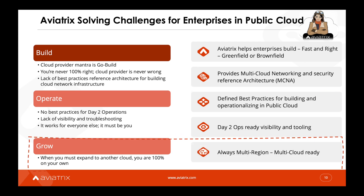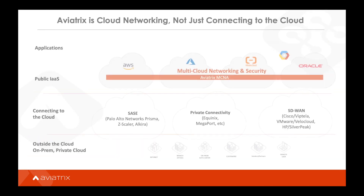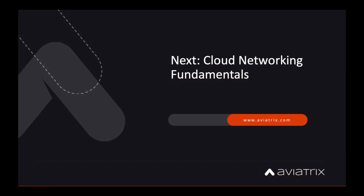We are always multi-region ready and multi-cloud ready, so when you need to grow, Aviatrix is there to help. Over the course of this training, we'll go into more details as to how we do that. Often the question comes up: where does Aviatrix fit in the ecosystem of independent software vendors, or ISVs? The answer is that Aviatrix, as a born-in-the-cloud company, is all about cloud networking. We help enterprises connect to the cloud, and through our deep partnerships with each CSP — AWS, Azure, GCP, OCI, and Alibaba Cloud — we help enterprises securely grow their business in the cloud. In the next module, we'll cover the fundamentals of public cloud networking.